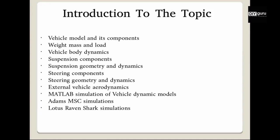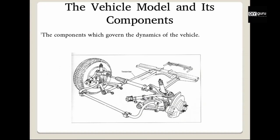Let's quickly go through the broad topics one by one in a little bit of detail. The first topic is the vehicle model and its components. If you have ever seen the underside of a car, you will notice there is a shock absorber here, another shock absorber here, and this rod — which is an anti-roll bar — which we will talk about in detail in the respective videos. We will also cover what these A-arms are, how they govern the suspension system, what the upper link does, and what role all these components play in the entire vehicle dynamics.